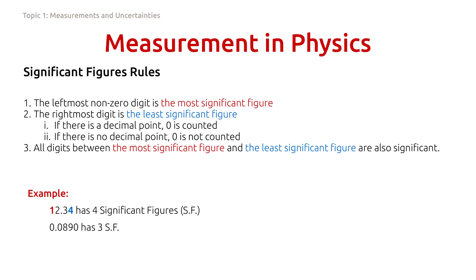The second example, 0.0890 has three significant figures. The most significant figure is 8, and the least significant figure is 0. The rightmost zero is counted as significant figure because there is a decimal point.